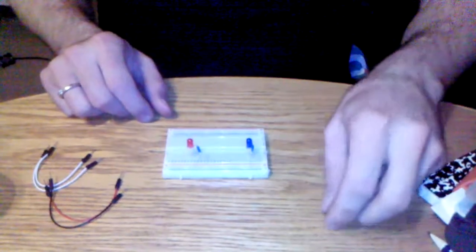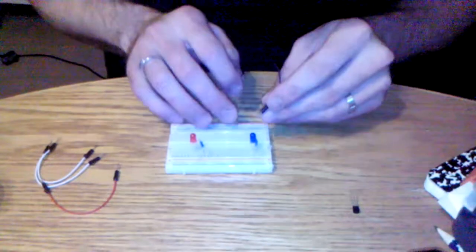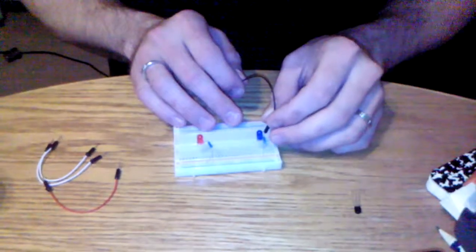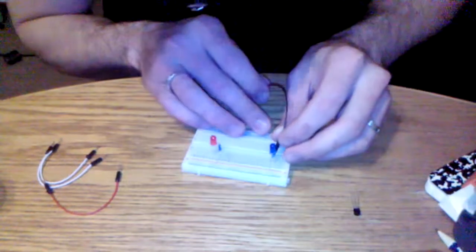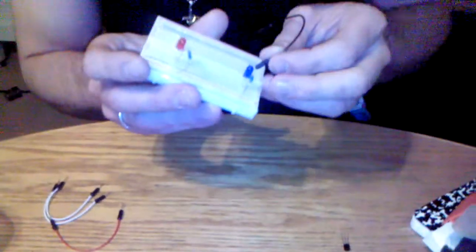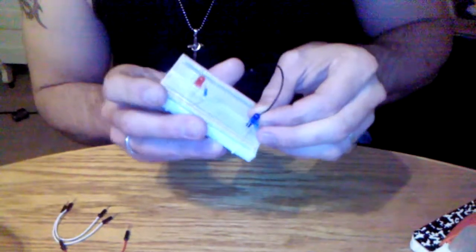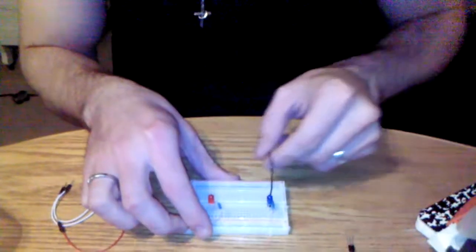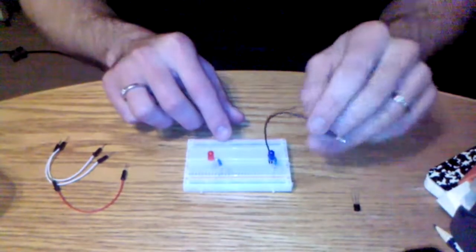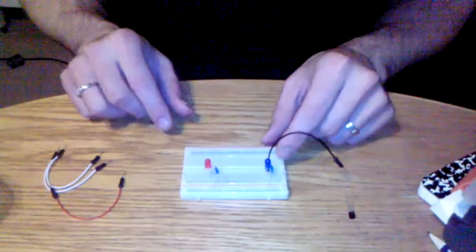Okay, so then you'll take your jumper, put it into the negative side. That'll act as a probe. Okay, so remember that.